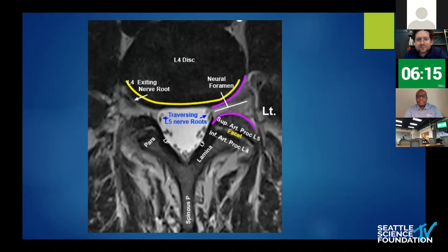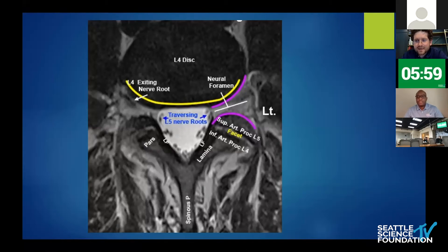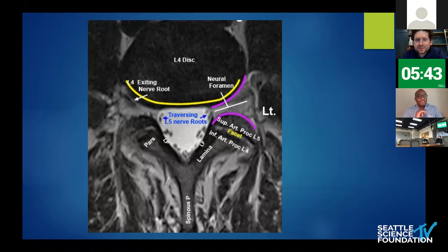Once you understand both the bony and soft tissue anatomy, the most basic question posed to a resident or med student about the lumbar spine is: what nerve are you operating on? The majority get that wrong. There is a traversing nerve root and an exiting nerve root. The traversing nerve root passes by the level when you're operating on a microdiscectomy. For instance, at the L4-5 disc, your traversing nerve root is L5 and your exiting nerve root is L4.